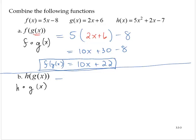That would be take the h function, and wherever you see an x, put a quantity. So 5 times something squared plus 2 times something minus 7.